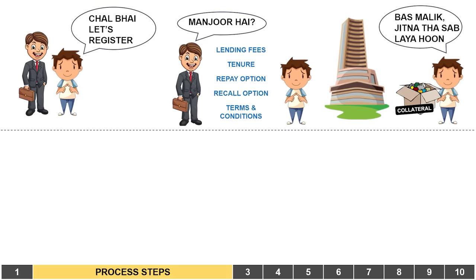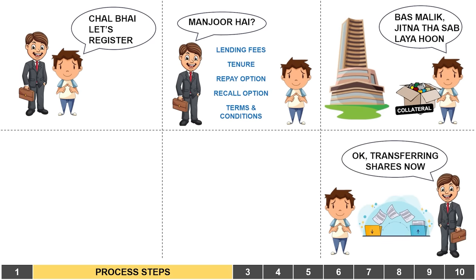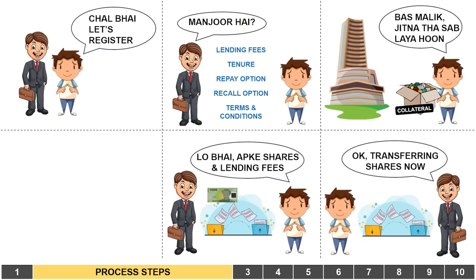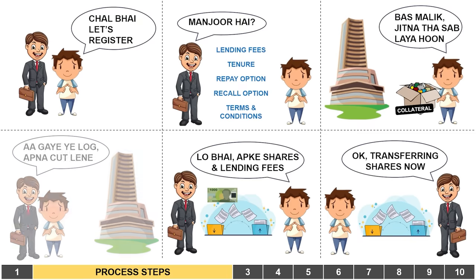Next, the borrower places a collateral for the stocks, facilitated by the exchange. Then the agreed number of shares are transferred from the lender's DMAT account into the borrower's. At the stipulated date and per the contract terms, the borrower returns the stocks and pays a fee to the lender. From this fee the intermediary takes brokerage, the exchange also makes some money, and the remaining amount is credited to the lender's bank account. Anyone can borrow or lend stocks including insurance companies, banks, short sellers, fund houses, HNIs, and even retail investors.